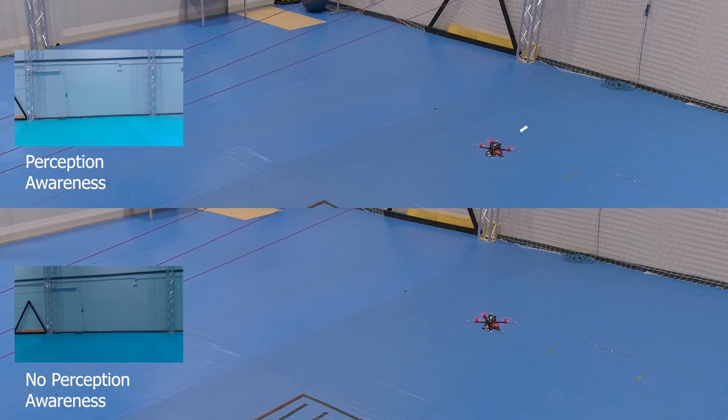Next, we analyze the effect of perception awareness in power line perching. The same perching maneuver is shown in both videos, but considering perception awareness in the above case.